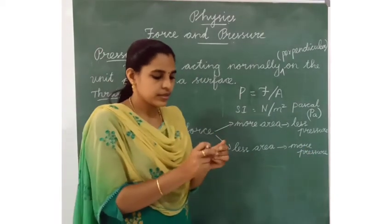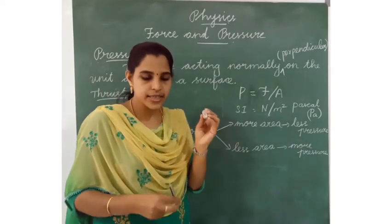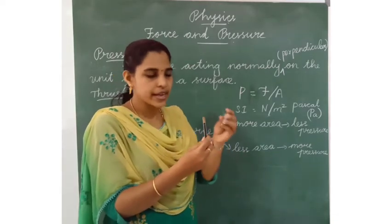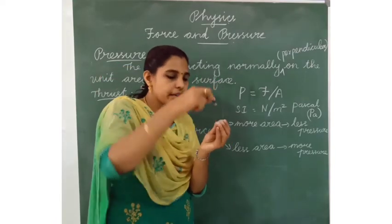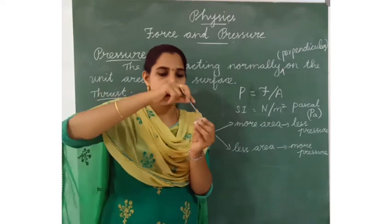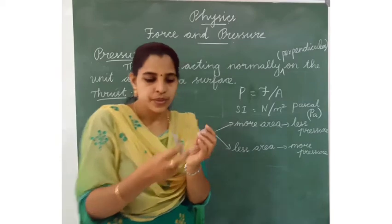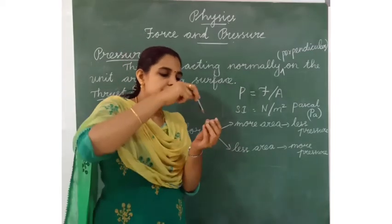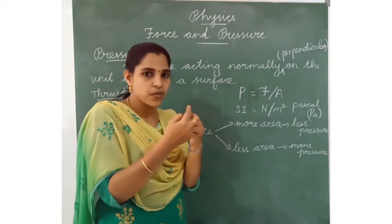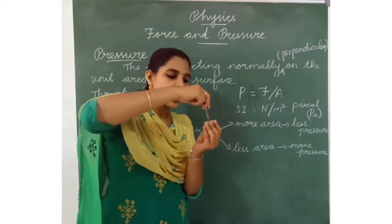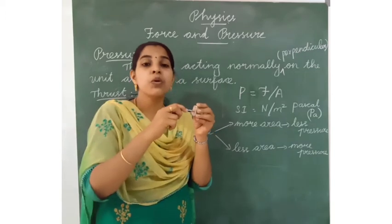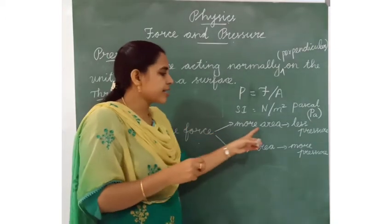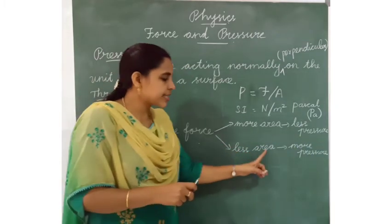For example, already we did this experiment. This is the eraser. When we apply the force on that eraser, it has more area, so it will get only less pressure. When we use this pencil, it has a tip. When we give the pressure, this is the less area. When we use this tip and apply the force on an eraser, it will make a hole because it has more pressure. According to their area, the pressure will change. When the area is more, it has less pressure. When the area is less, it has more pressure.